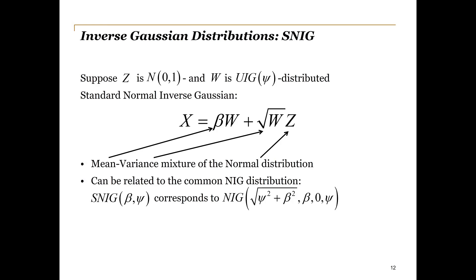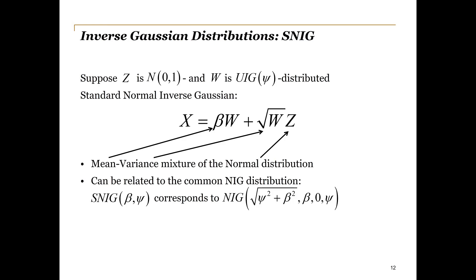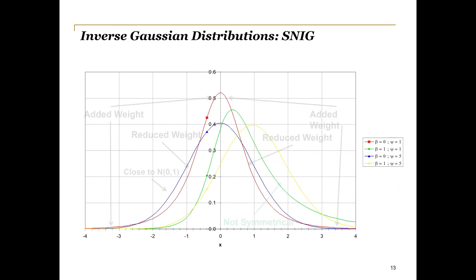Using the mean variance mixture technique, we now create X as a mean variance mixture of the normal distribution with a UIG as the mixing distribution. X then has what we call the standard normal inverse Gaussian distribution. And the values of beta and psi determine the location, scale, skewness and kurtosis. This graph shows how positive beta skews the distribution to the right, while smaller psi causes higher peaks and heavier tails. We see that it is now possible to adjust the distribution, leading to a leptokurtic distribution, to better model the asset price returns with.